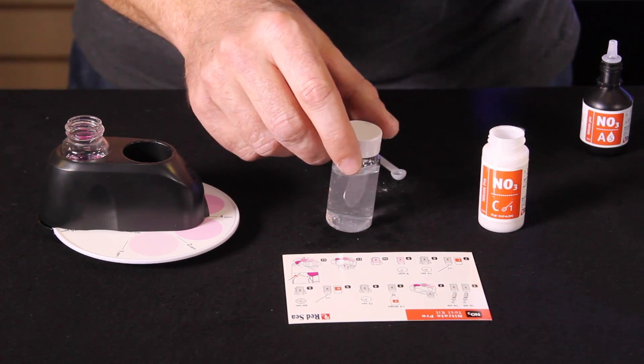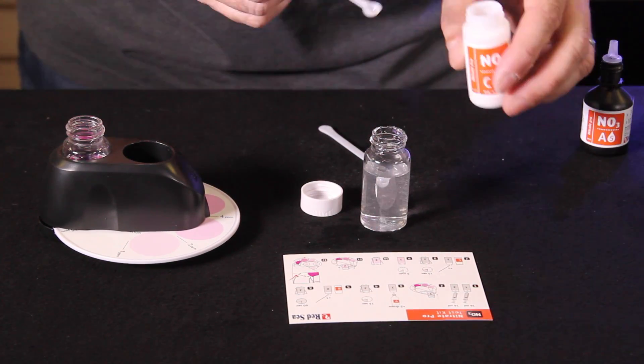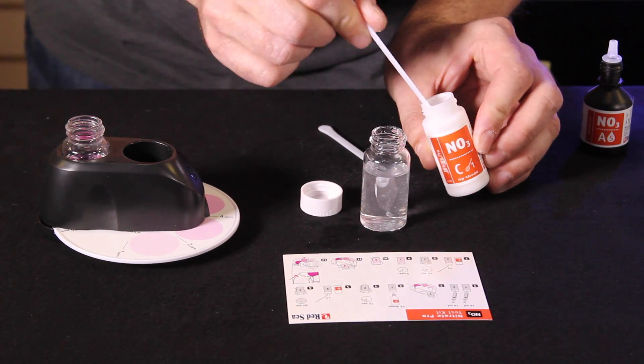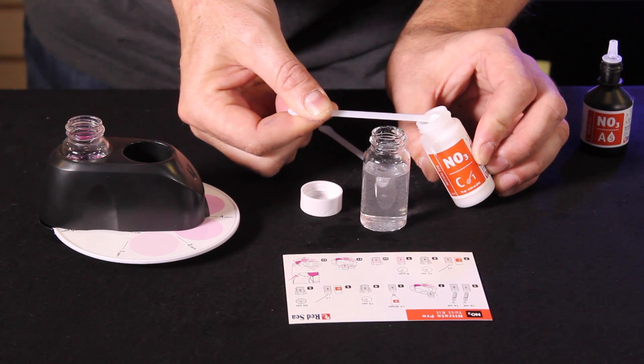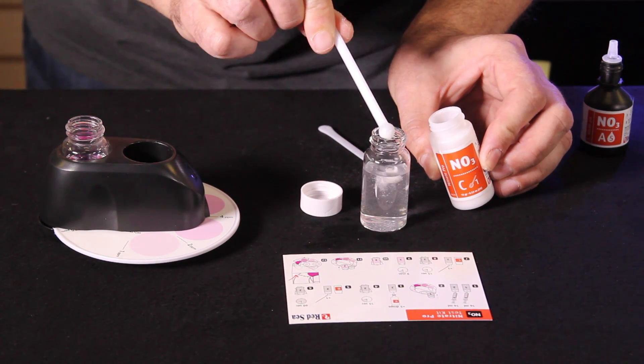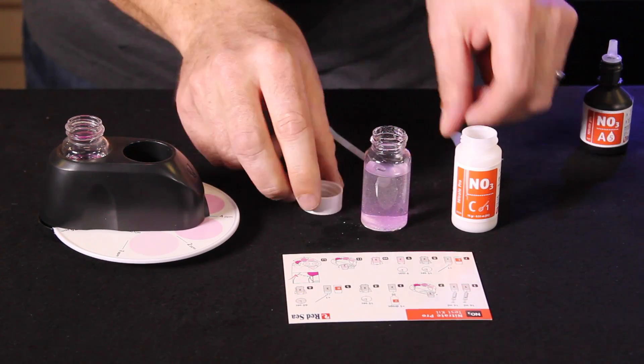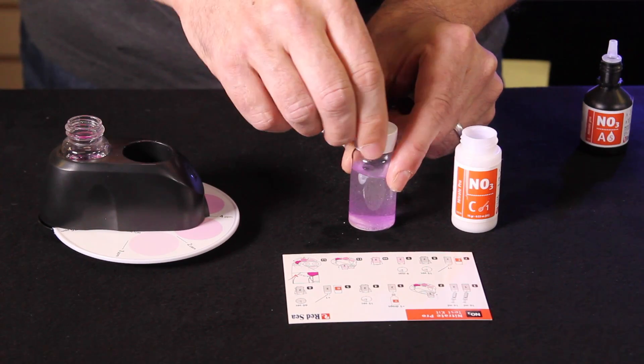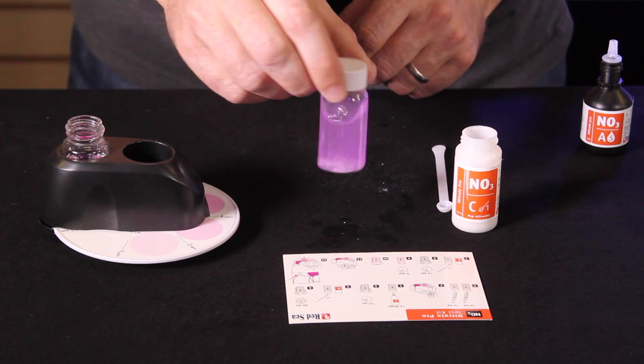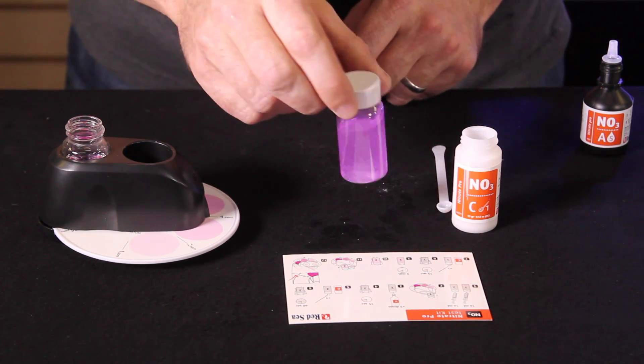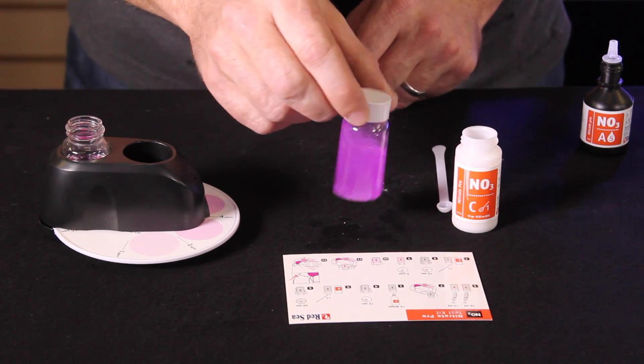So now we've done 60 seconds there. We're going to go ahead and get one level scoop of reagent C. Now you notice they provide you two spoons with these test kits. One for reagent B, one for reagent C. That's because you don't want to cross contaminate any of your reagents. So keep the spoons with the reagent. It's not a bad idea to actually label them. Now we need to swirl for 15 seconds now that we've added the one scoop of reagent C.